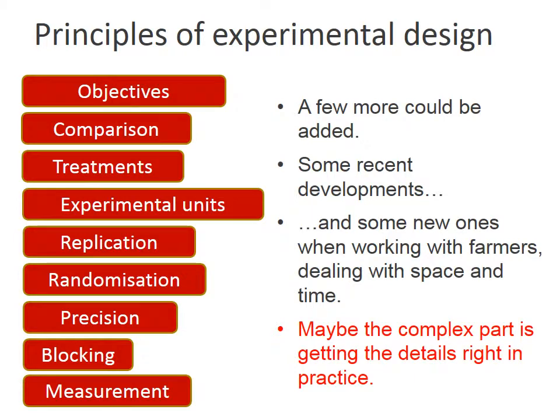So there we have the nine most important concepts to understand for the design of effective and valid experiments. There are a few more that could be added, and there have been some developments since Fisher's time. When researchers work closely with farmers, or want to look at how effects vary in space or over time, there are a few more concepts that are important.